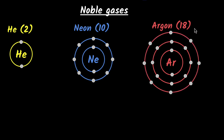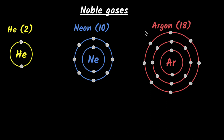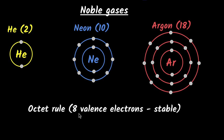If we continue this with all the other noble gases, we find that except helium, all noble gases have eight electrons in their outermost shell. We thought that maybe this is the reason why these gases are noble — meaning they don't react. Maybe the rule for stability, which we now call the octet rule, is that you need eight valence electrons. Valence means electrons in the last shell, the valence shell.